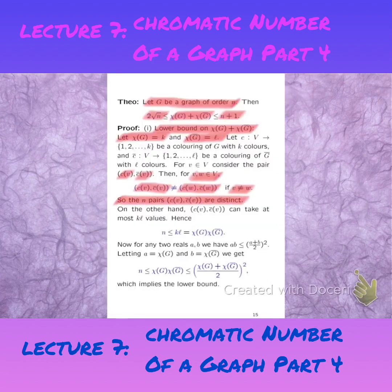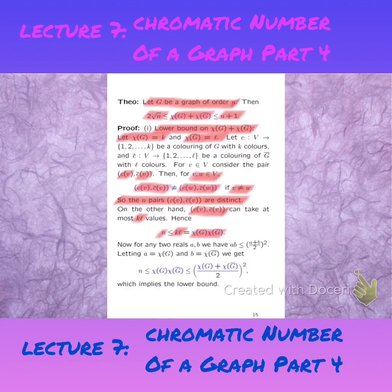These pairs are distinct and there are N such pairs. These ordered pairs can take at most K times L values, because there are K options for C of V and L options for C-complement of V. Therefore, the number of pairs is at most KL, which is the chromatic number of G times the chromatic number of G's complement. Now, for any two real numbers, the product is always at most the square of their sum divided by two. So letting A be the chromatic number of G and B be the chromatic number of G's complement, this relationship holds.